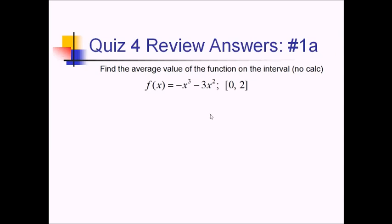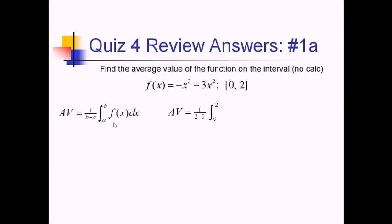On this problem, we're trying to find the average value of this function over the interval from 0 to 2. In general, average value is found with the formula 1 over b minus a times the integral from a to b of f of x dx. So in this case, we have 1 over 2 minus 0 times the integral from 0 to 2 of the f function, which is negative x cubed minus 3x squared.